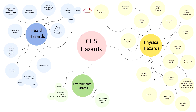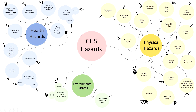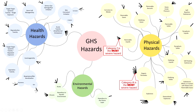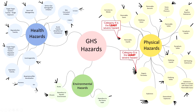Within each GHS class, chemicals are designated into categories based on the severity of their hazards. Categories are shown here by black lines attached to the class circles. The most severe category is given the lowest number, 1, or the earliest letter, A, and is represented by the shortest category line. There is no set number of categories per class.